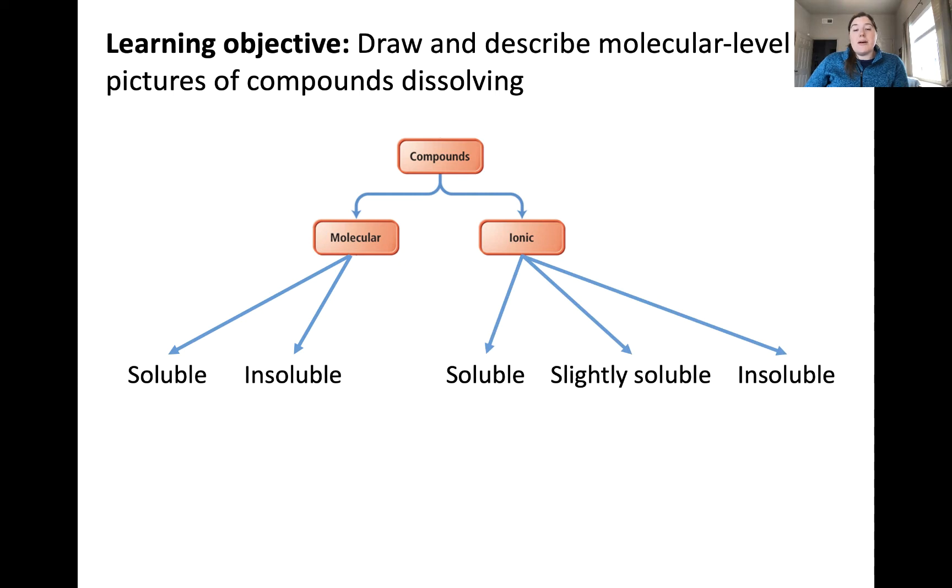And ionic compounds that are soluble, slightly soluble, or insoluble, also in water. Now when we're talking about solubility, we could think about a lot of different types of solvents, but in this class specifically, for this learning objective, we're going to focus on solubility in water.